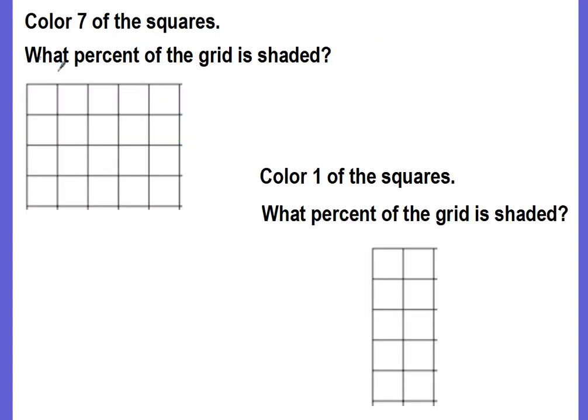The next two examples. Here we're going to color 7 of the squares. So go ahead and do that, color 7, and then see if you can figure out what percent is shaded. Pause the video to do this and come back and see if you're right.